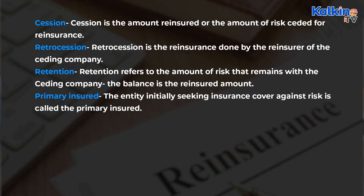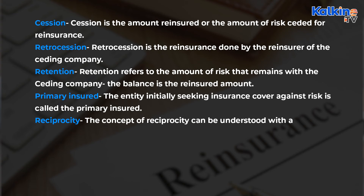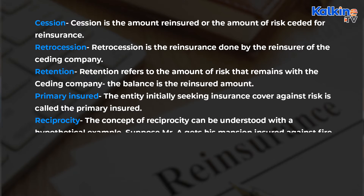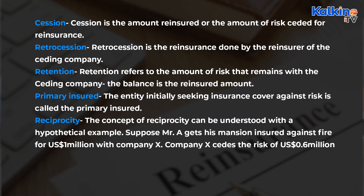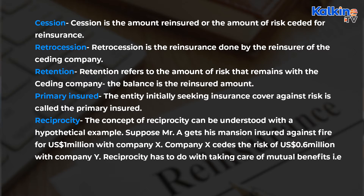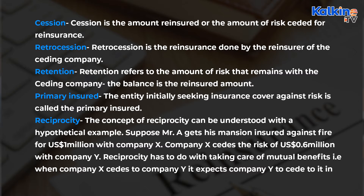The entity initially seeking insurance cover against risk is called the primary insured. The concept of reciprocity can be understood with a hypothetical example: suppose Mr. A gets his mansion insured against fire for US $1 million with company X. Company X cedes the risk of $600,000 with company Y. Reciprocity has to do with taking care of mutual benefits — when company X cedes to company Y, it expects company Y to cede to it in the future.